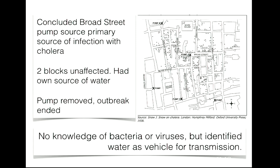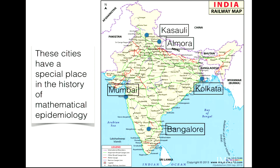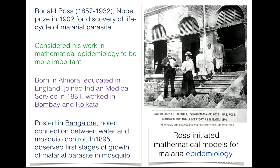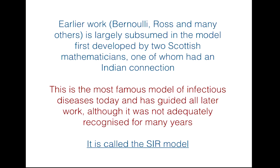On a map of India, certain cities—Kasauli, Almora, Mumbai, Kolkata, and Bangalore—have a special place in the history of infectious diseases. Ronald Ross, who lived between 1857 and 1932, won the Nobel Prize for discovering the life cycle of the malarial parasite; he was born in Almora, educated in England, and joined the Indian Medical Service, working in Bombay and Kolkata. When posted in Bangalore, he noted the connection between water and mosquito control and initiated models for malaria epidemiology. Earlier work on mathematical epidemiology by Bernoulli, Ross, and others is largely contained in the famous SIR model.